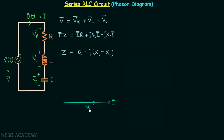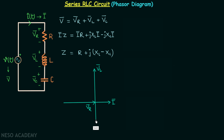VL phasor is the voltage across the inductor and therefore it will lead the current by 90 degrees. VC phasor is the voltage across the capacitor and therefore it will lag the current by 90 degrees.